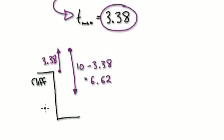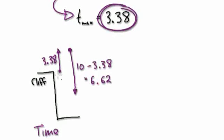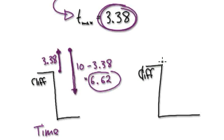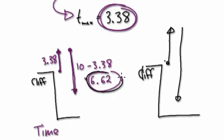Looking at our time diagram, it takes 3.38 seconds to get to its maximum height. That means it's going to free fall for another 6.62 seconds. The question is: what is the distance? Looking at our distance diagram — the cliff — we need to know the actual distance to get to its maximum height, and then the distance for the free fall of 6.62 seconds.